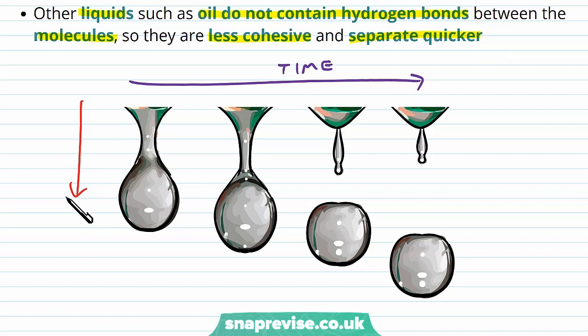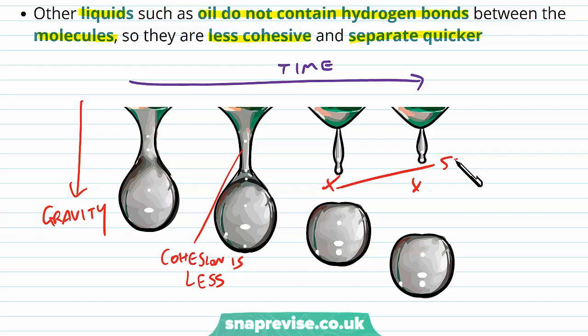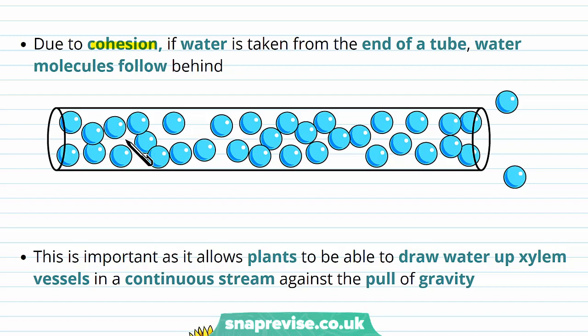Cohesion also affects the way that water moves through a particular area. If you take water out of the end of a tube, the water molecules that are behind end up following to replace what was lost, and the reason for this is cohesion. All of these water molecules are bound via hydrogen bonds, so if you take some water out of a tube, the cohesion means it pulls the water molecules towards where they're being taken from, and all of the water ends up flowing from one end to the other.